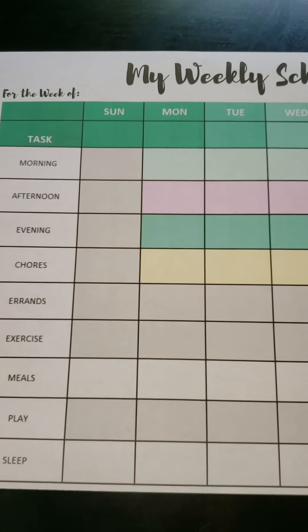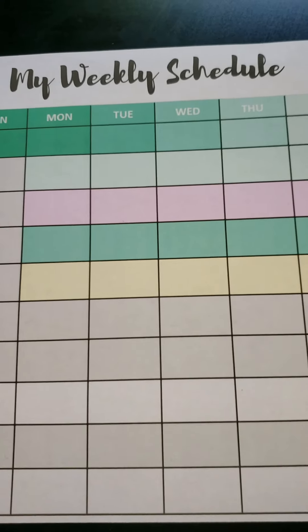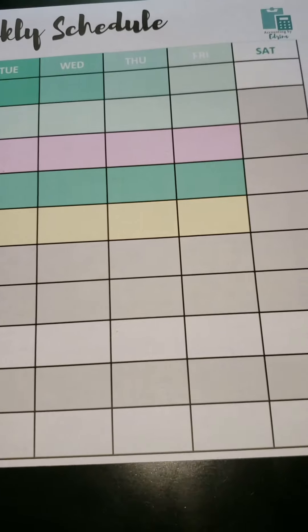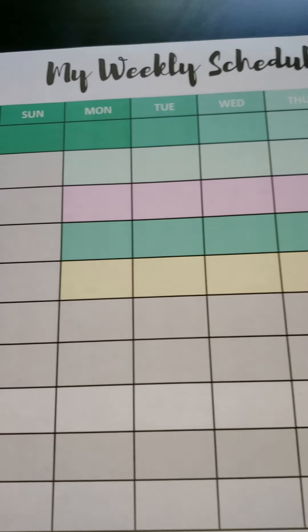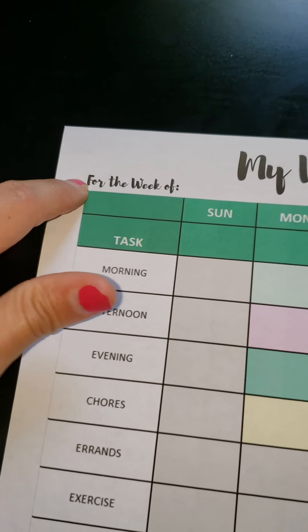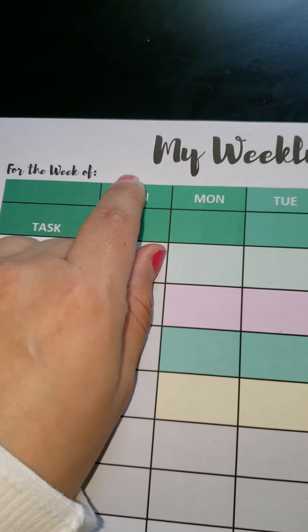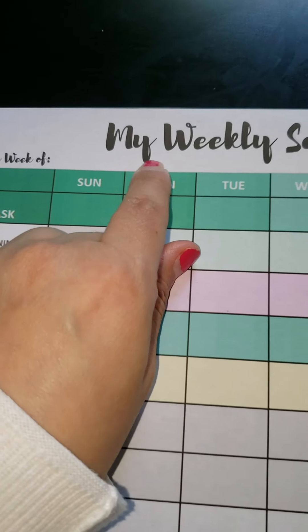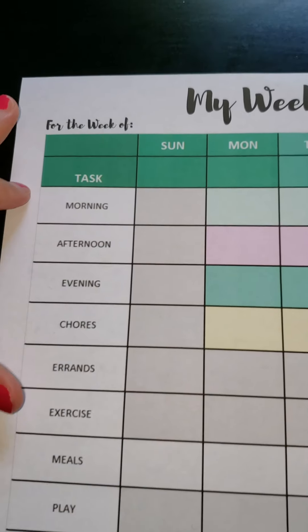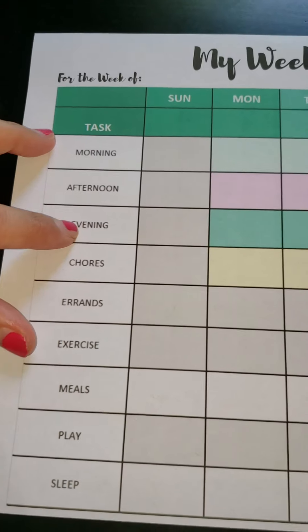Here is an up-close look at my weekly schedule, and let me walk you through how to fill this out. You would start with 'week of' and then put the dates — let's say it's July 1st through July 7th. On Sunday, are there any specific things that you do in the morning, afternoon, and evening?